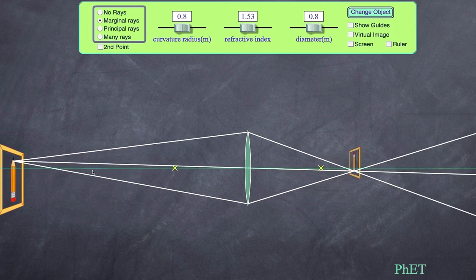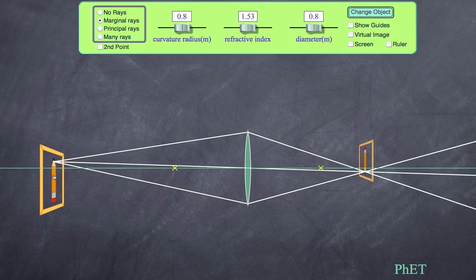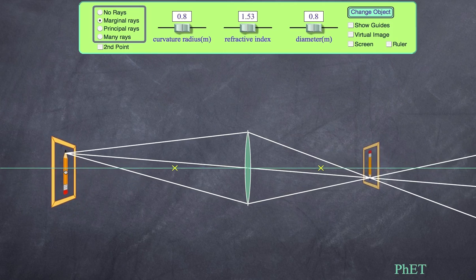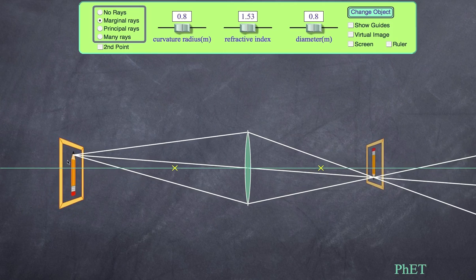Clearly if I move further and further away with the object, this image will get closer and closer to the focal point. But like our other example before, I cannot move this object so far away that this image will appear in front of the focal point - it'll always be behind it. The position of the object in relation to the lens will have an impact on the actual size and distance of the real image on the other side of the lens.